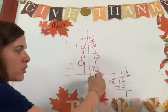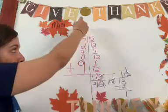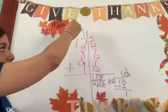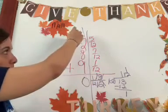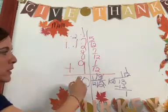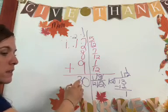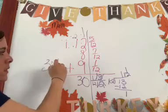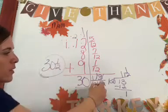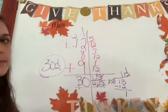So you cross this out. You put your 1 twelfth here. You put your 1 up here. 1 plus 2 is 3 plus 8 is 11. 11 plus 9 is 20. Put your 2 up here. 2 plus 1 is 3. And your answer is 30 and 1 twelfth because that's what's left right there.